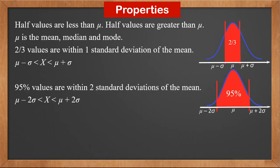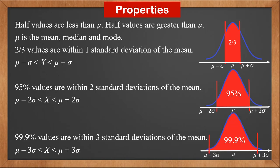95% of the values are within 2 standard deviations of the mean. This means x is between mu minus 2 sigma and mu plus 2 sigma. On the graph, we can see that this range covers almost all values. 99.9% of the values are within 3 standard deviations of the mean. This means x is between mu minus 3 sigma and mu plus 3 sigma. On the graph, we can see that this range covers almost all values.